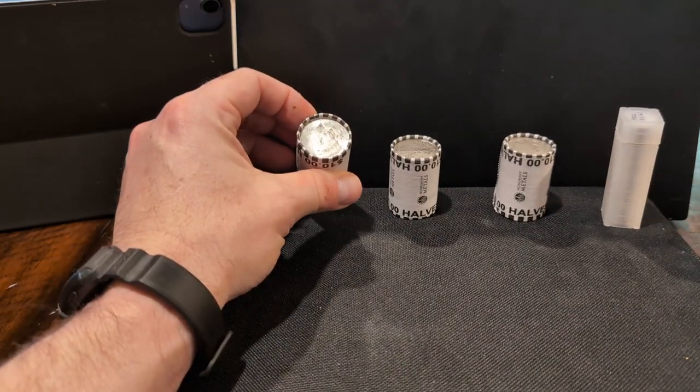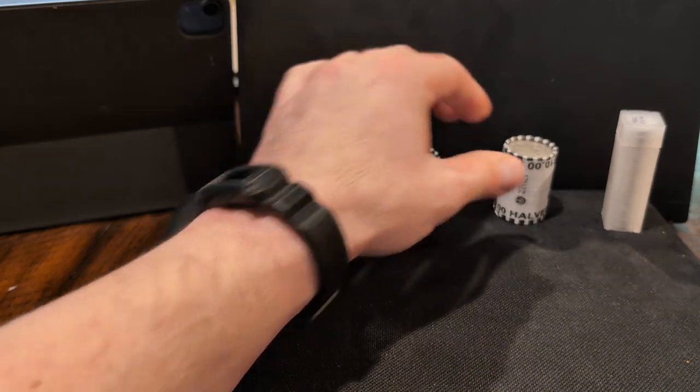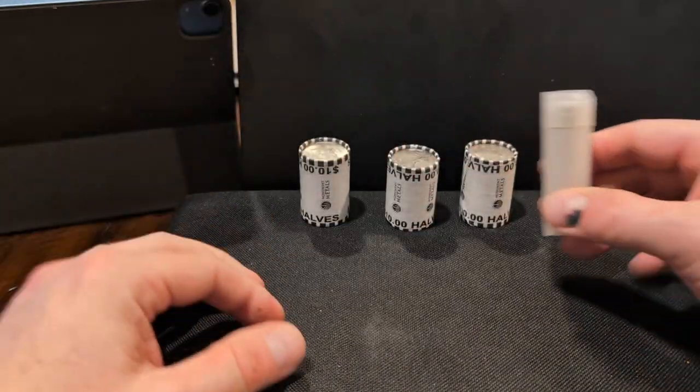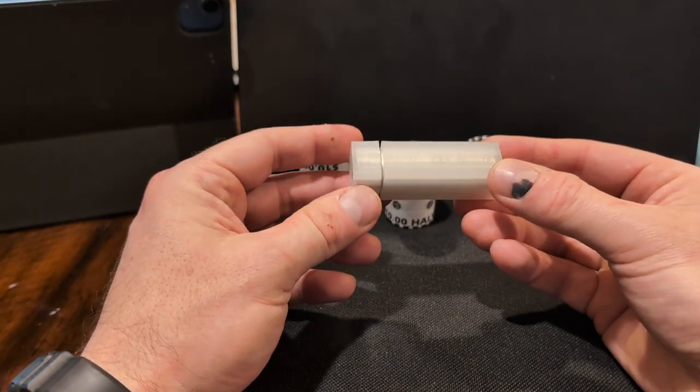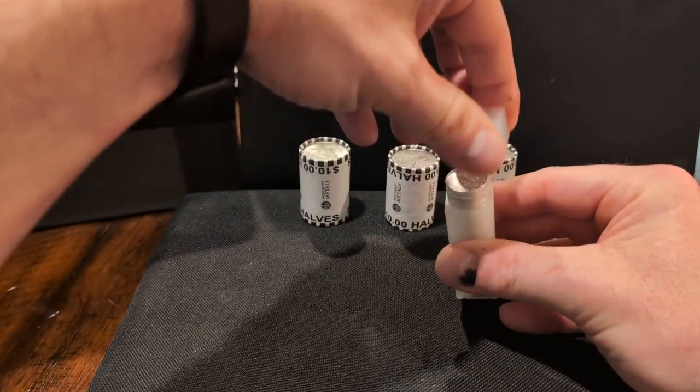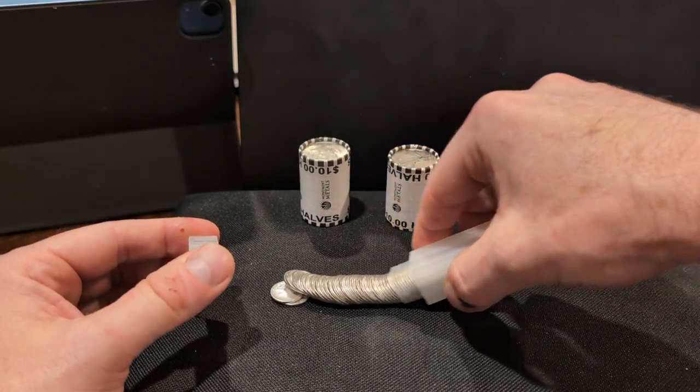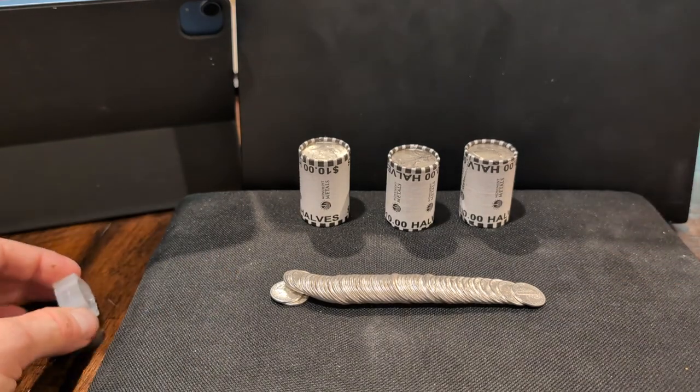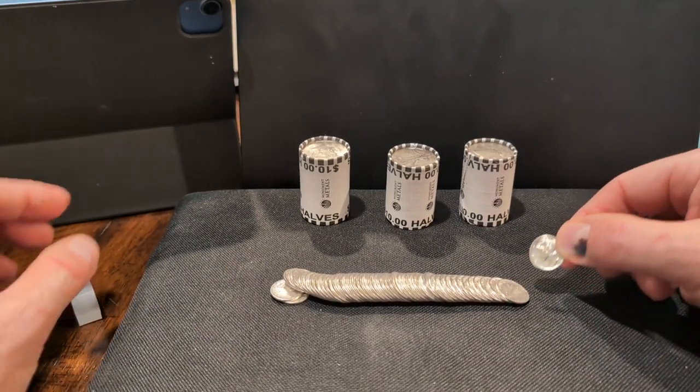The Kennedy half, Walking Liberty half, and the Franklin half, and the roll of Mercury dimes, which I think are going to probably look the best out of all what I have here, because they were advertised as almost uncirculated.